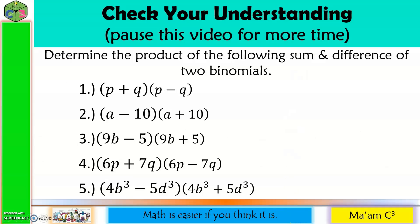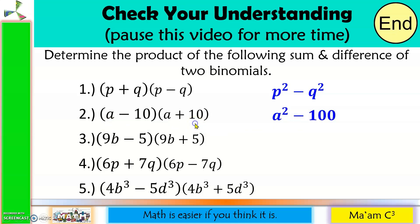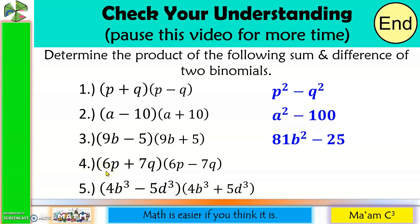Now it is time to check your understanding. Let us answer number 1: square P to get P squared, and then always negative — the square of Q is Q squared. Number 2: the square of A is A squared, minus — the square of 10 is 100. Number 3: the square of 9 is 81, the square of B is B squared, so 81B squared, always negative — the square of 5 is 25. Number 4: the square of 6 is 36, the square of P is P squared, so 36P squared, always negative — the square of 7 is 49, the square of Q is Q squared, so 49Q squared.